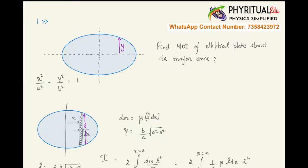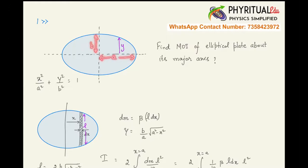You can see the situation. The equation of the ellipse is x²/a² + y²/b² = 1, where b is the length of the semi-minor axis and a is the length of the semi-major axis. You have to find the moment of inertia of the elliptical plate about its major axis. Now I'm going to present my solution.